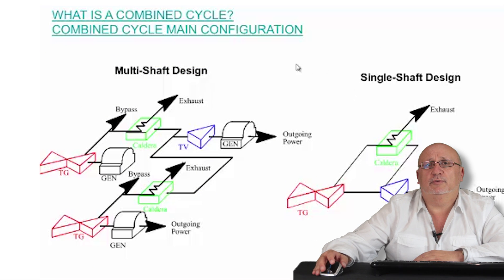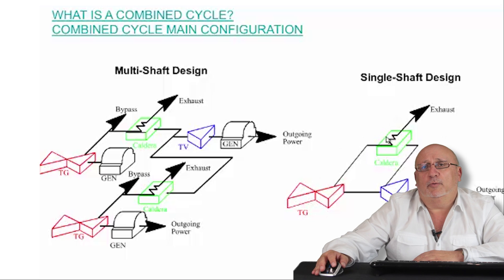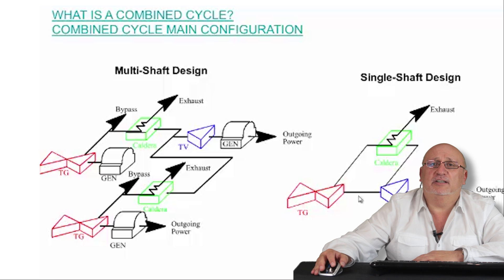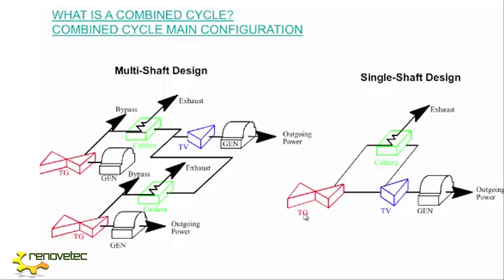There are two main configurations for the combined cycle. One configuration is single shaft: one gas turbine, one steam turbine, and one generator are all connected on the same shaft, turning together. The boiler receives the flue gas from the outlet of the gas turbine into the HRSG. The other configuration is multi-shaft, where each turbine has its own generator and the gas turbine and steam turbine are not connected on the same shaft.